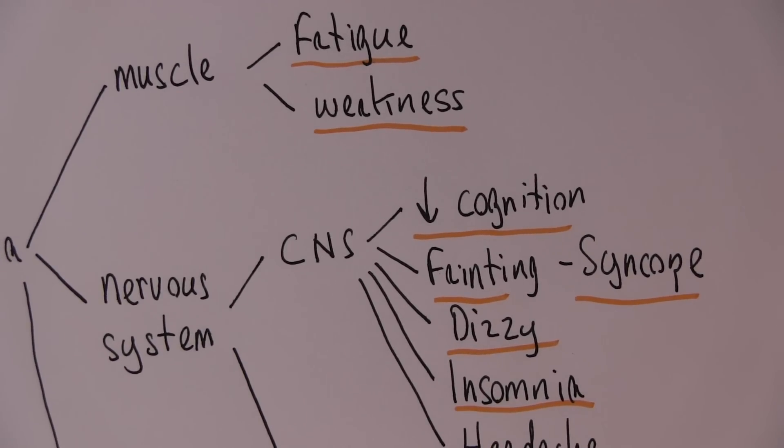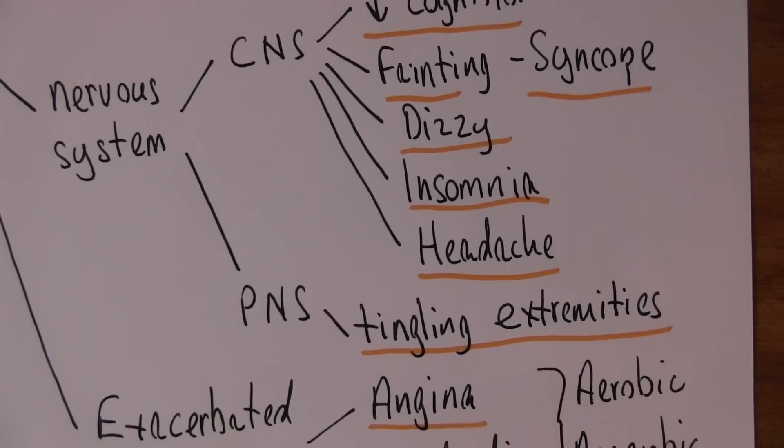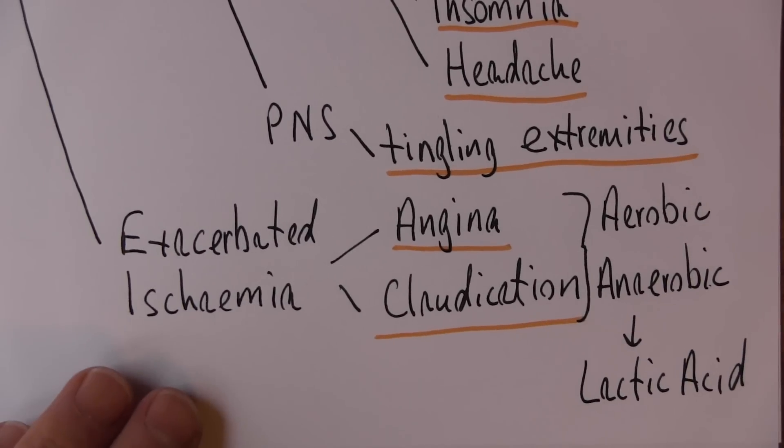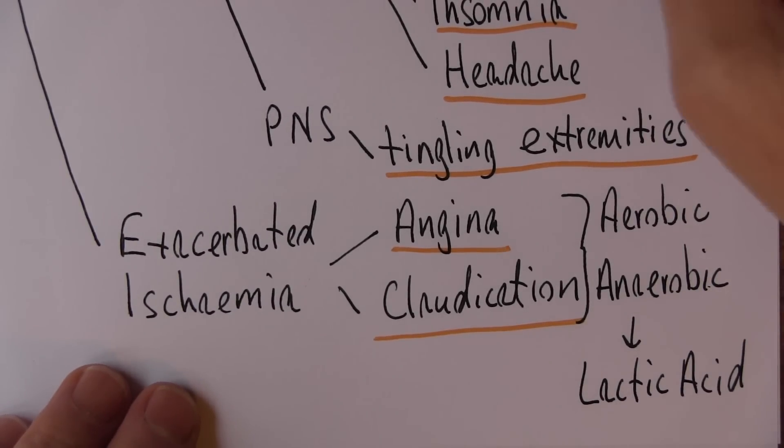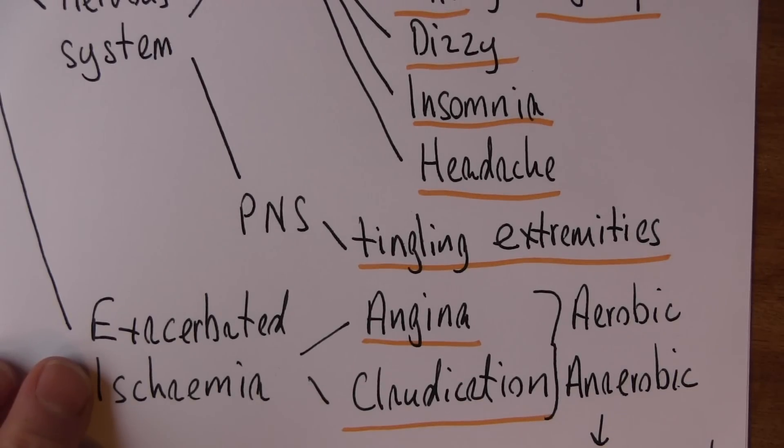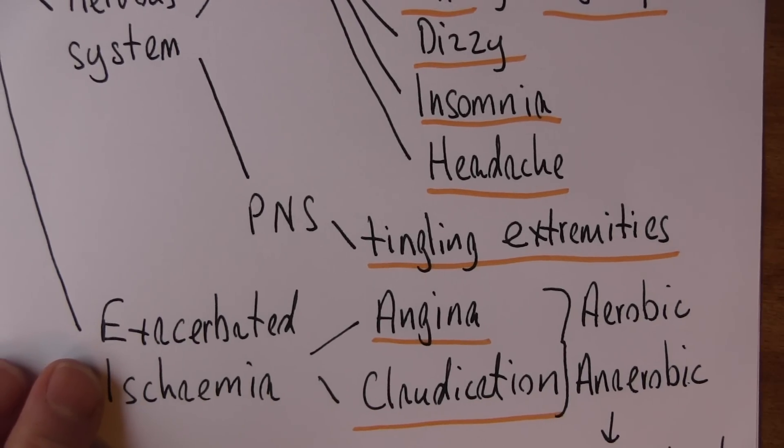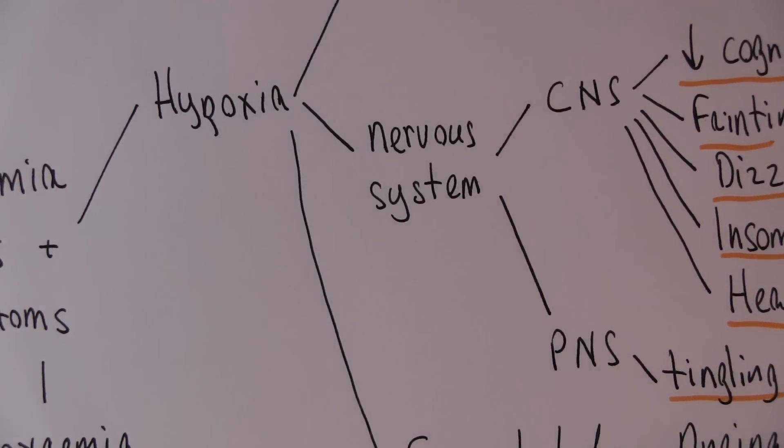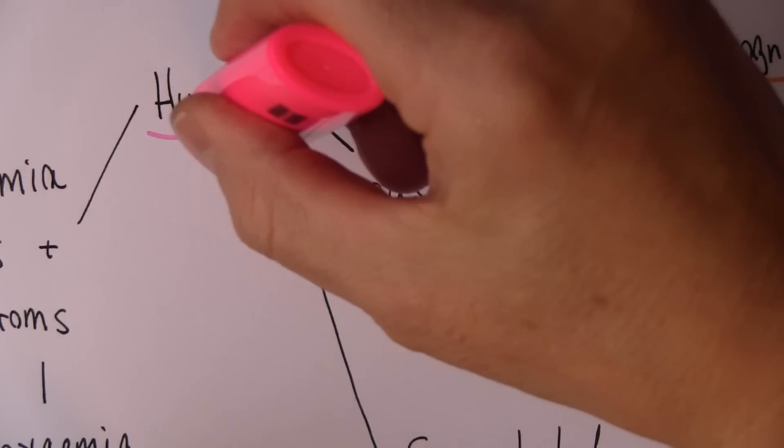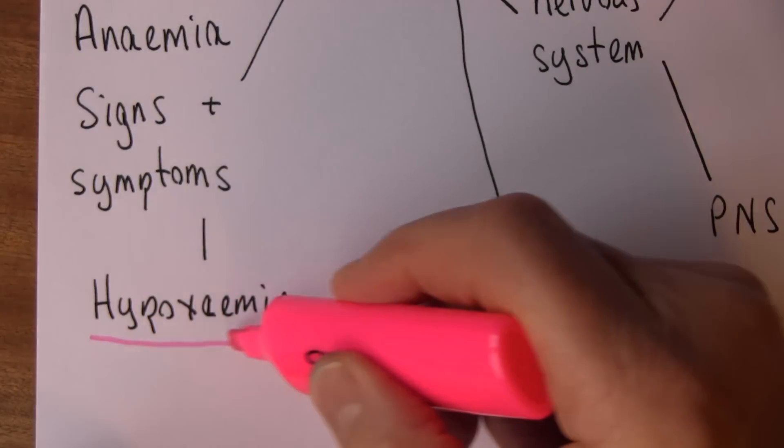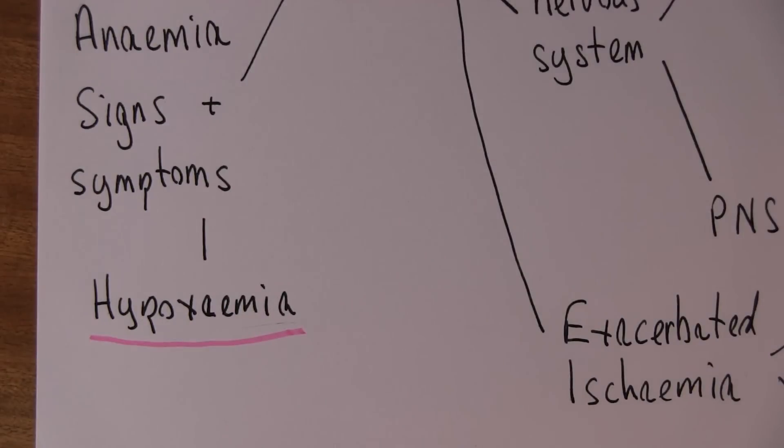So there we have some of the clinical features caused by hypoxia in the tissues. As you've probably gathered, these videos are for people that want to understand what's going on. You can get a simple list from any internet site. These videos are aimed at increasing understanding. So that's the hypoxia area looked at. Next we want to look at the clinical features caused by hypoxemia. This will be the next mind map we want to develop.